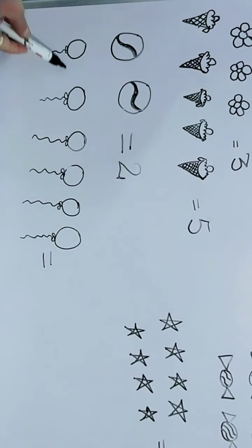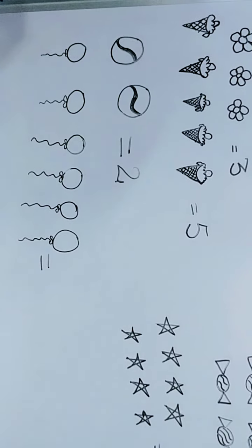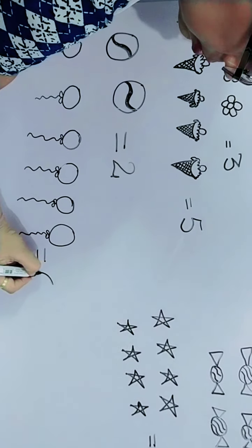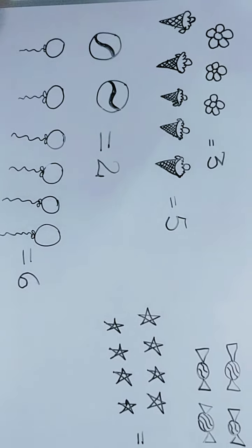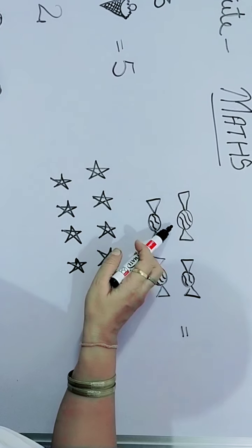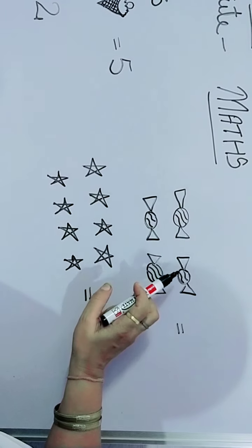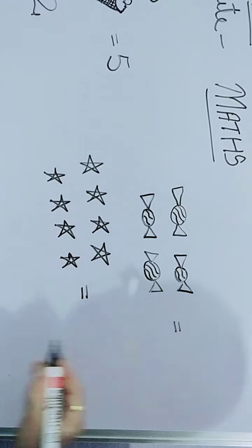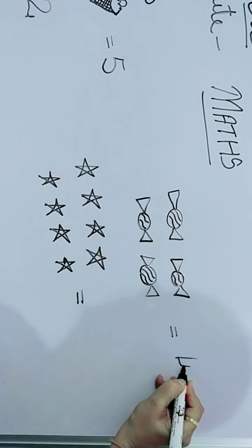Balloons, 1, 2, 3, 4, 5, 6. How many balloons? 6. There are toffees, count them. 1, 2, 3, 4. How many toffees are there? 4.